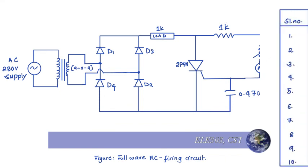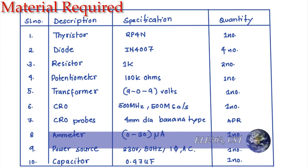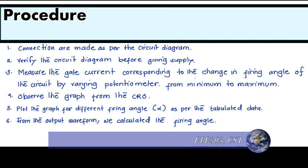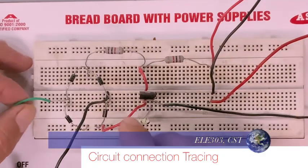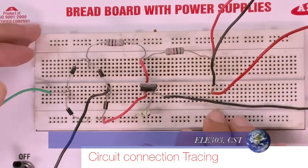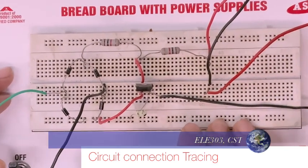For the full wave rectifier circuit, the apparatus used in this experiment are listed. Moving to the procedure: connections are made as per the circuit diagram. Verify the circuit diagram before giving supply. Measure the gate current corresponding to the change in firing angle by varying the potentiometer from minimum to maximum, and observe the graph from the CRO. Plot the graph for different firing angles as per the tabulated data, and from the output waveform we calculate the firing angle.